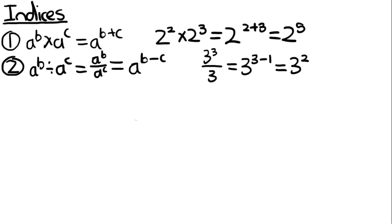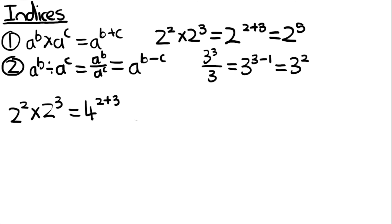It's very important again that the bases have to be the same, otherwise the indices law doesn't work. A common mistake I used to make when starting this topic: if you have 2 to the power of 2 times 2 to the power of 3, I used to multiply the 2s together and write 4 to the power of 2 plus 3. Please don't do that — it's a really easy mistake to make.